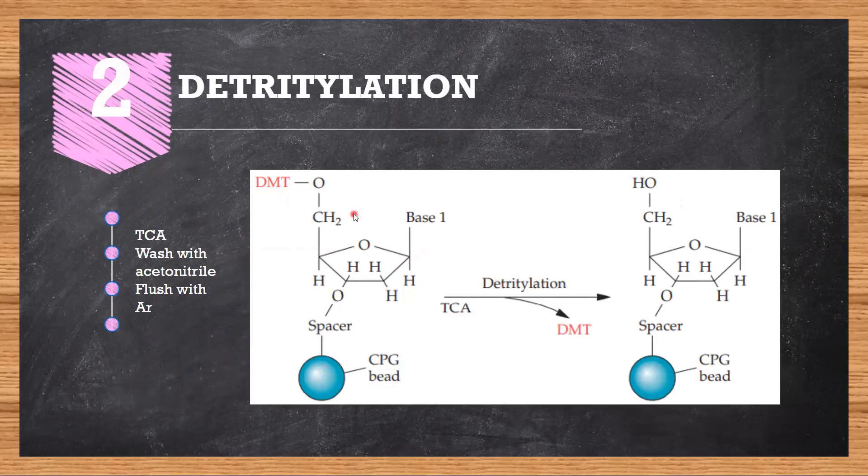After adding the first nucleotide, the second step is detritylation. Why? Because the first nucleotide that you added to the support needs to be coupled to the next, and for coupling we need this site empty. For that reason, the step is detritylation, removal of the DMT group.